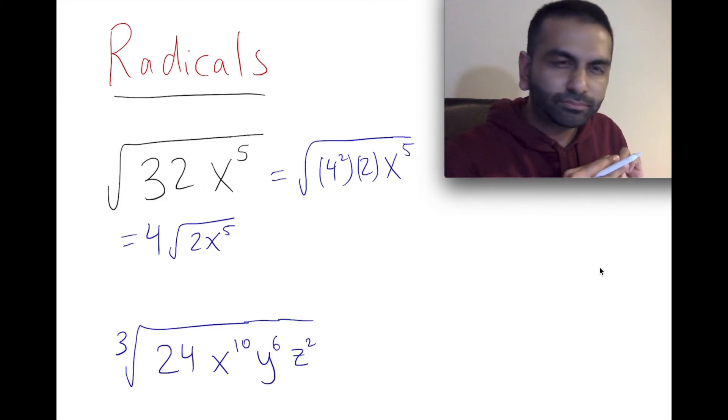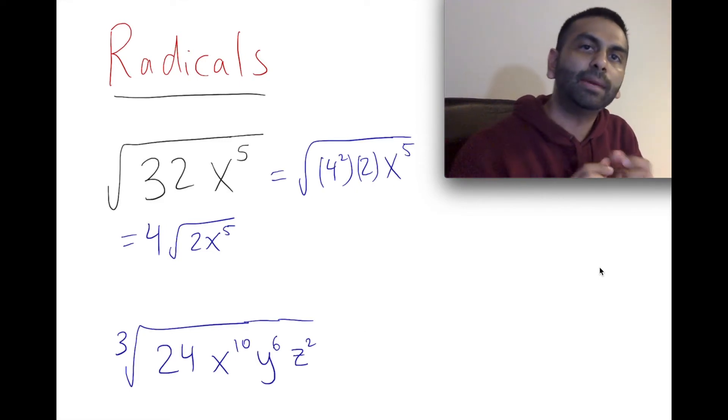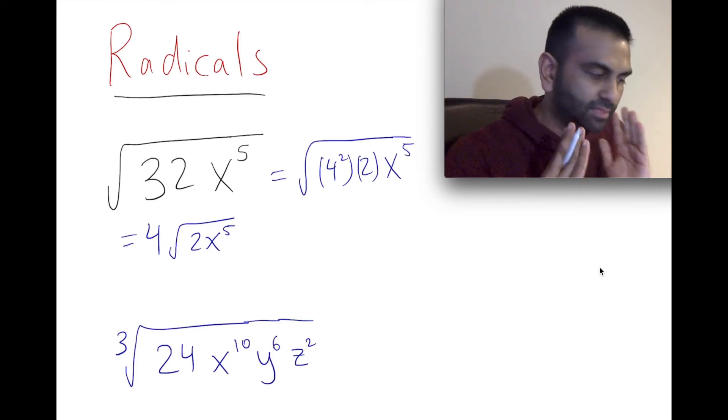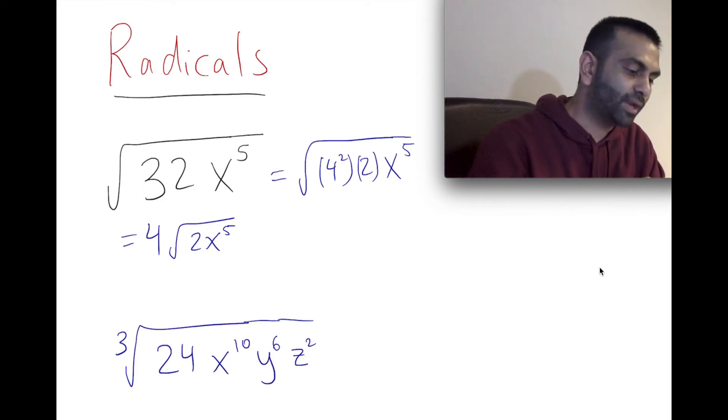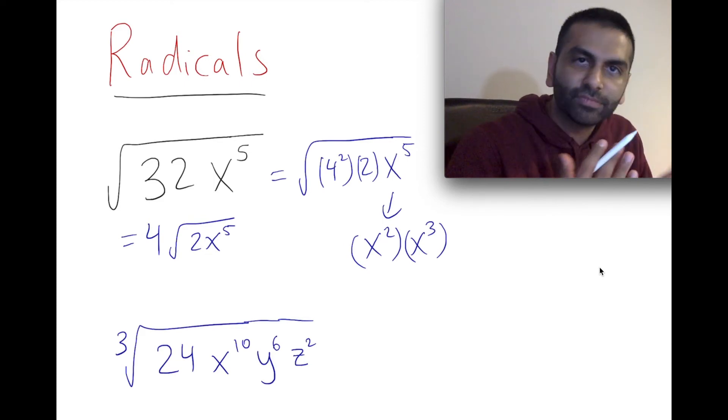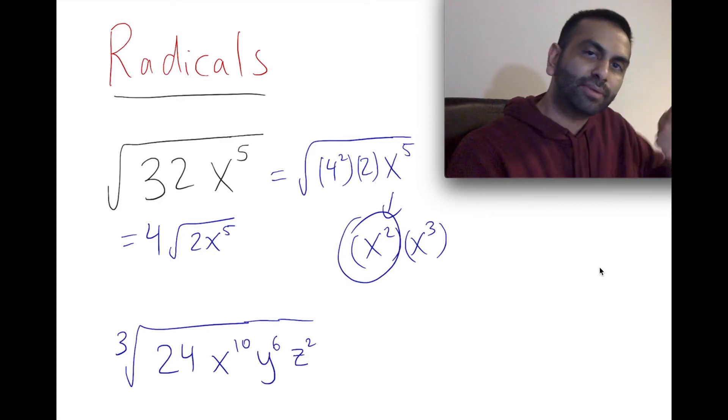So now what about this though? What if you have a variable? Well, technically you're doing the same thing. You're trying to see if x to the fifth power could be written as a product of things where one of those things is a perfect square. So the easy thing to do is you could break down the x to the fifth and say x to the fifth is really x squared times x cubed, because you can add those to get x to the fifth. And you know that x squared is a perfect square. So when you break it down like that, this guy can come out of the radical as an x, and then you're left with this on the inside.